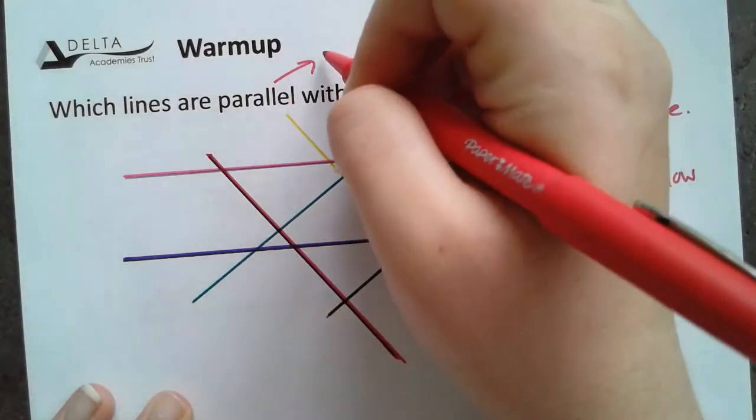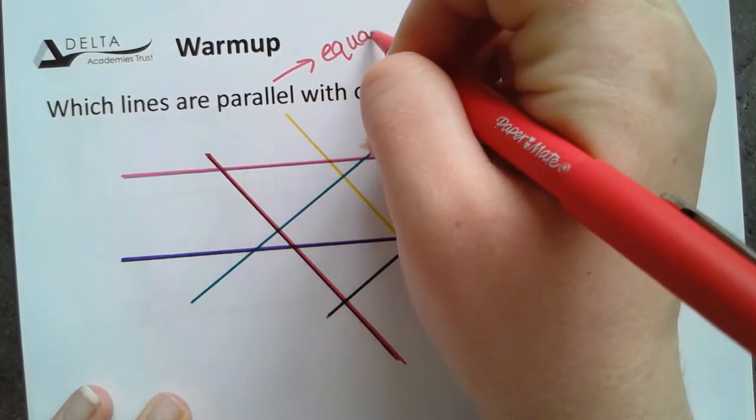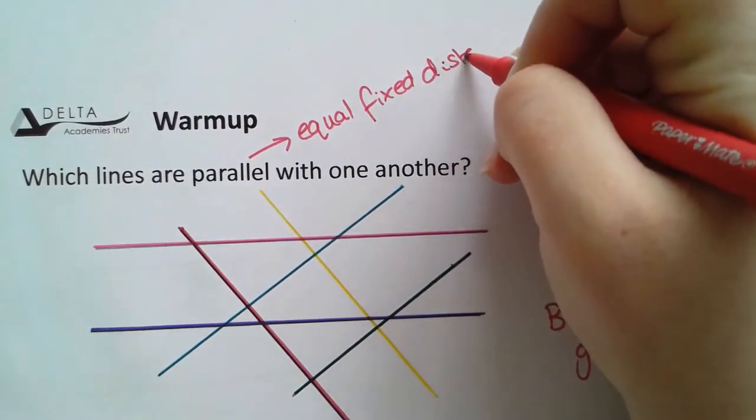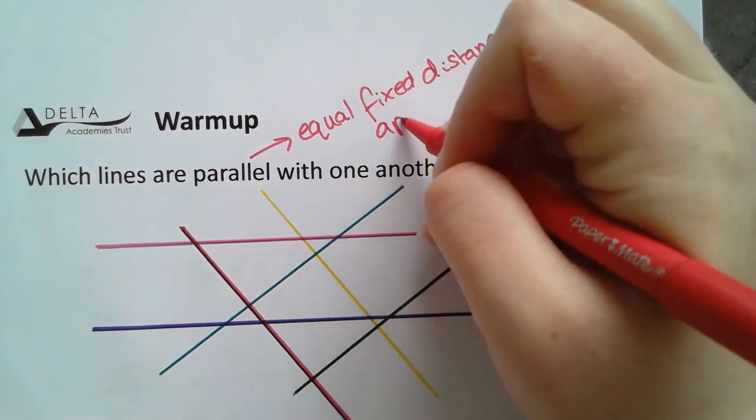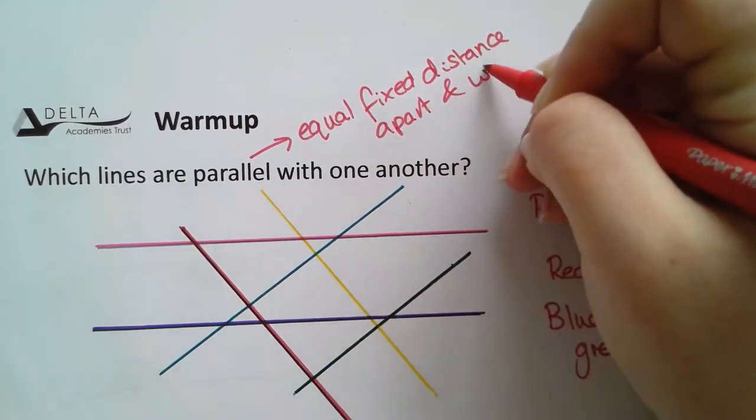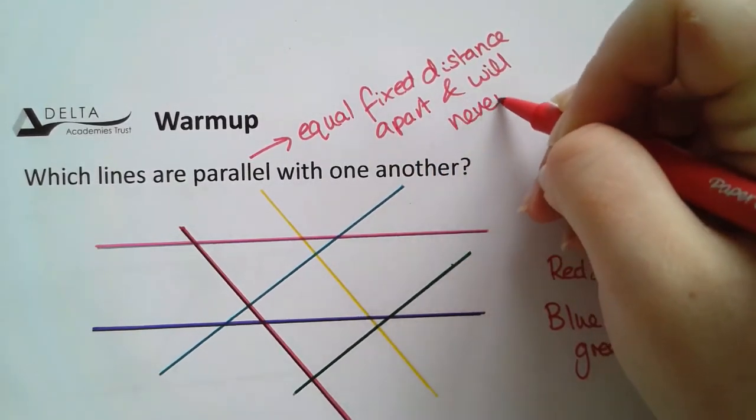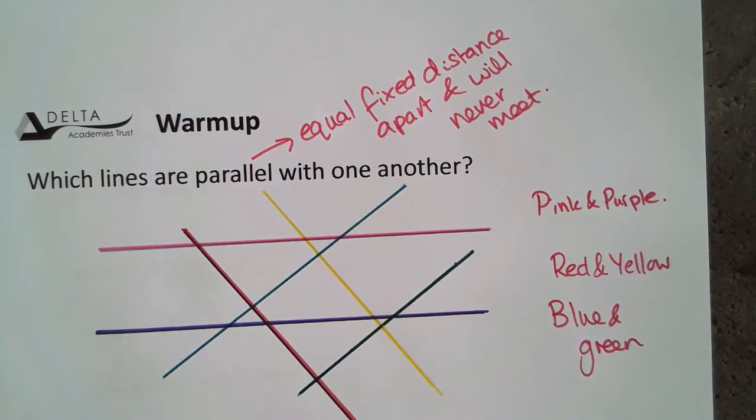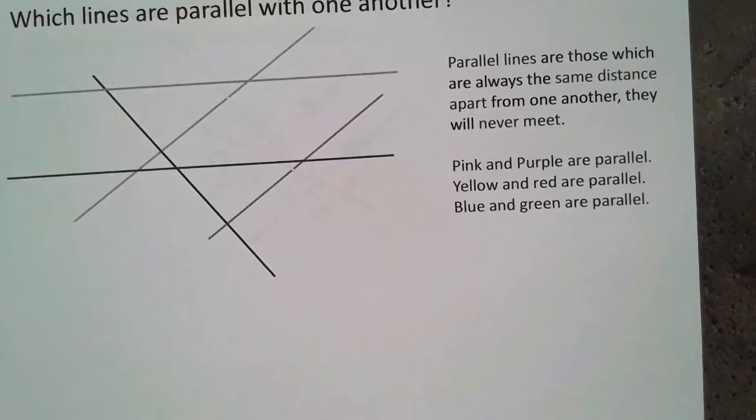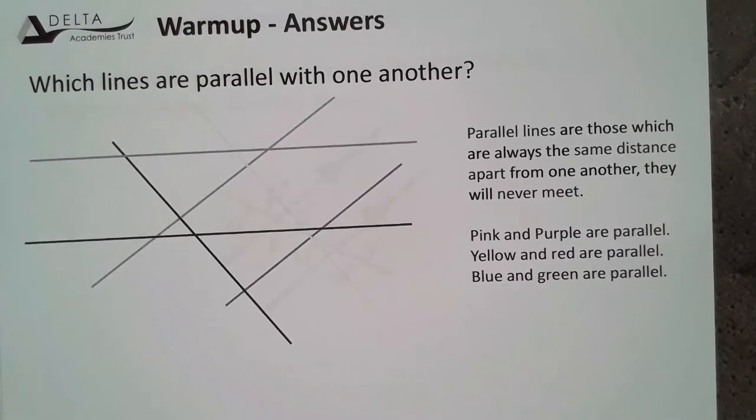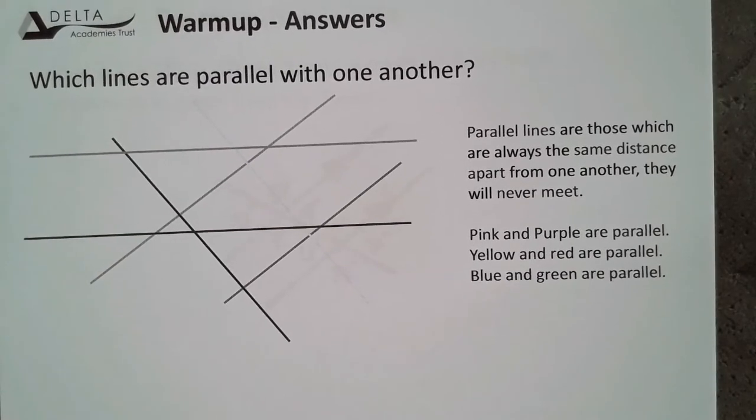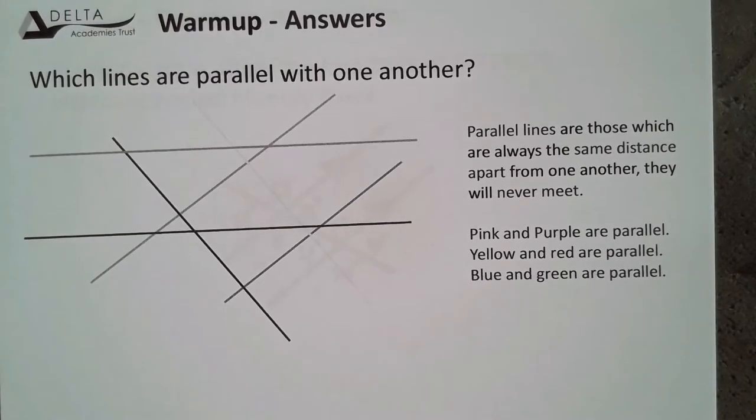So parallel lines are an equal fixed distance apart and will never meet. They're always the same distance away from each other and never ever meet.